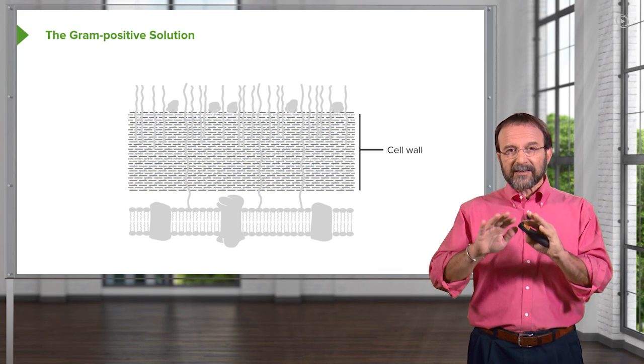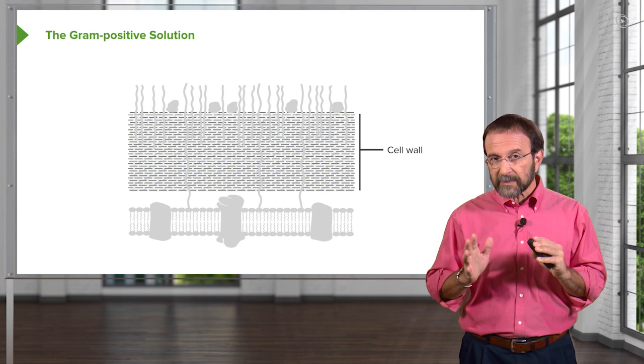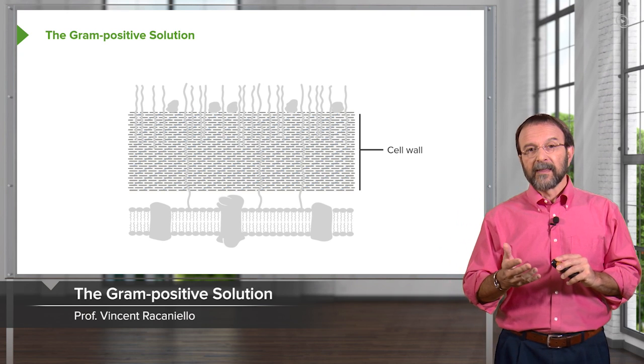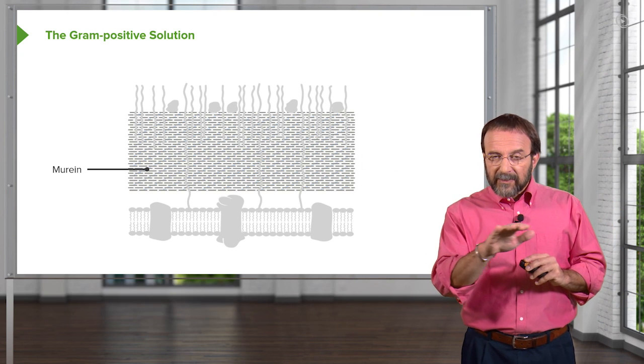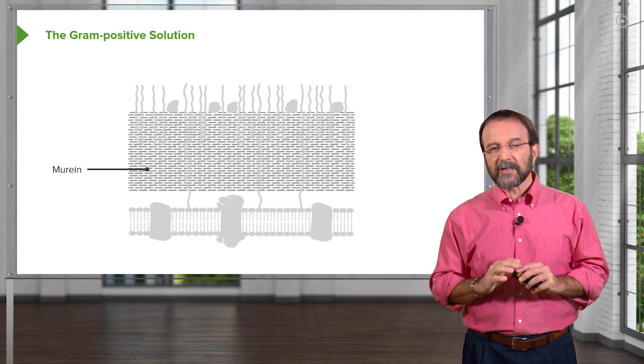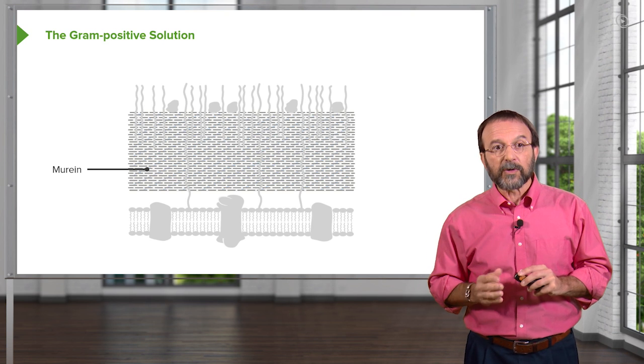Let's take a look now at the gram-positive solution in some detail so we can understand how it works. The outer layer of the gram-positive bacteria consists of this thick layer of peptidoglycan which can also be called murine.